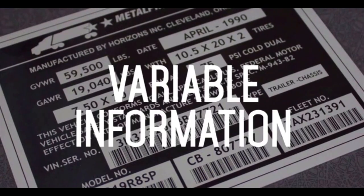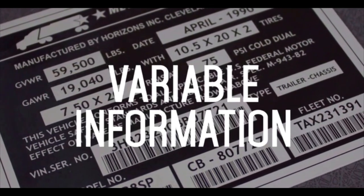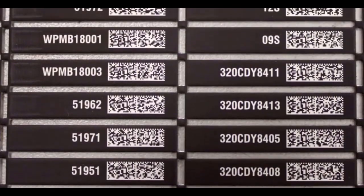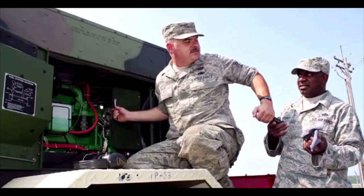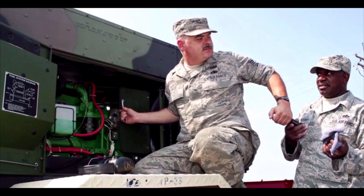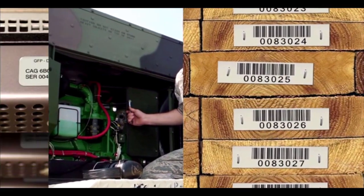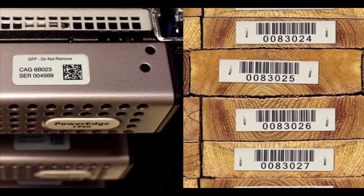The third benefit of MetalPhoto is variable information capability. Variable information capability means the MetalPhoto process supports item-unique information, be it unique operator instructions, serialized barcode labels, or unique identification or UID data matrix codes.